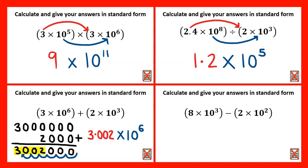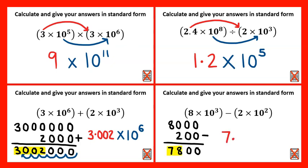Lastly we have the subtraction. Writing down the first number which is eight thousand and subtracting two hundred, we get seven thousand eight hundred. Meaning our final answer in standard form would be seven point eight times ten to the power of one, two, three.